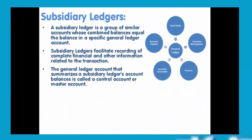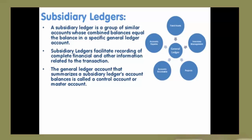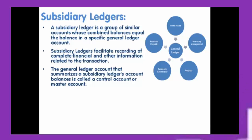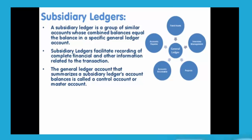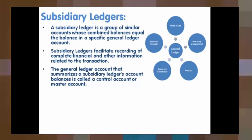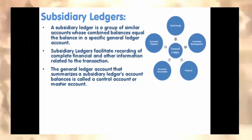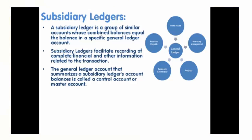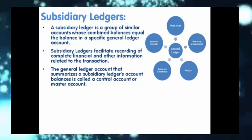Subsidiary Ledgers. Balances in General Ledger are often supported by various sub-ledgers. A subsidiary ledger is a group of similar accounts whose combined balances equal the balance in a specific General Ledger account. Subsidiary ledgers facilitate recording of complete financial and other information related to the transaction. For example, in the Fixed Assets subsidiary ledger you can find all the details pertaining to fixed assets owned by the company — apart from financial details like cost of the assets, other information like date of purchase, date when the asset was put to use, name of the supplier, and storage and location of the asset is also captured.